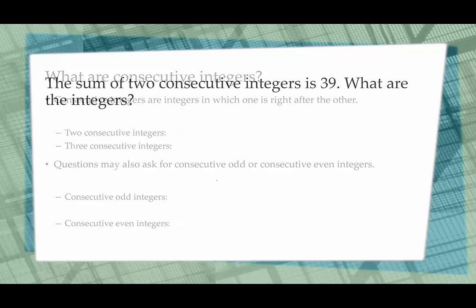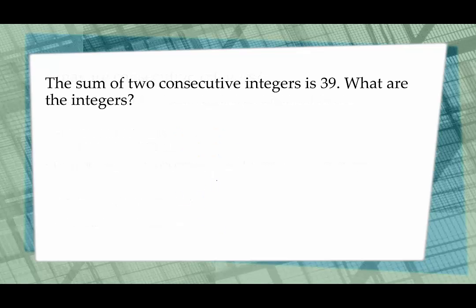Let's look at some examples. The sum of two consecutive integers is 39. What are the integers? Sum means we're adding the two things. If I call the first one x, the second one would be x plus 1. So the equation is x plus (x plus 1) equals 39. x plus x is 2x, then subtract 1 from both sides, giving me 2x equals 38.